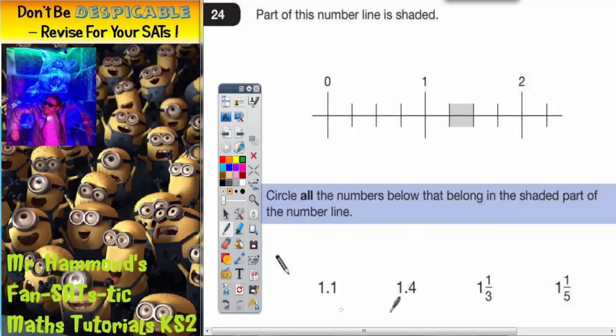As you can see we've got some of them in fractions, some of them in decimals. So let's turn them all into decimals. 1 and a third is 1.3 recurring. 1 and a fifth is one whole one and a fifth is 0.2, so that's 1.2.